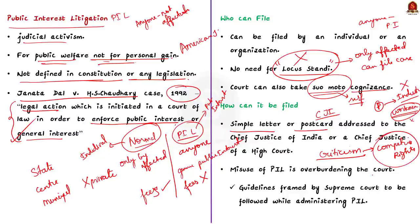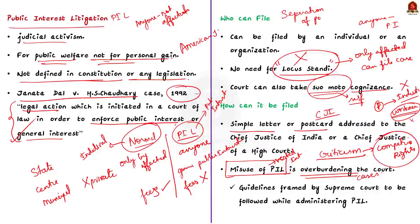The main issue with PIL is the concern about potential misuse. Many parties are trying to use PIL for vested interests. Another important issue is that the Indian judiciary is already burdened by a huge number of cases, and PILs will only increase this burden. There is also a criticism that the judiciary is stepping into the powers of the executive and legislature through PIL, which may sometimes violate the separation of powers.